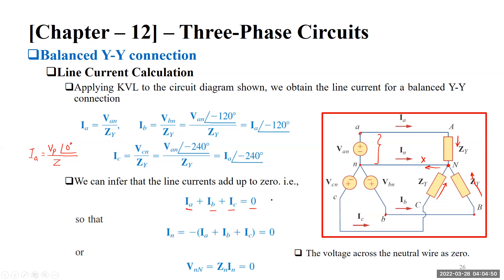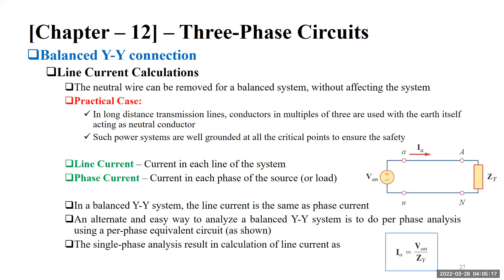If I_a + I_b + I_c is not equal to zero, it indicates an unbalanced system with some neutral current flowing. Also, the voltage across the neutral wire is zero in a balanced system. This is an advantage — the neutral wire can be removed from a balanced system without affecting the system.